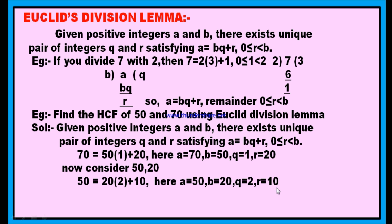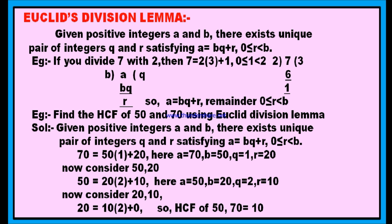Consider 20 and 10. If you divide 20 with 10, you can write 20 equals 2 times of 10 plus 0. Here you get the remainder 0. Since the remainder is 0, the divisor at this step is 10. Therefore, the HCF of 50 and 70 is equal to 10. In this process, you find the HCF of two numbers using Euclid's division lemma. We will learn some more questions from the exercises of the chapter Real Numbers in the next video.